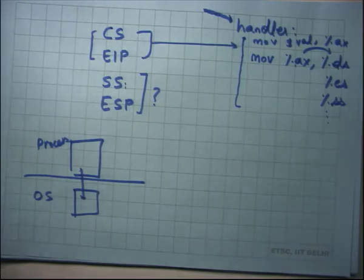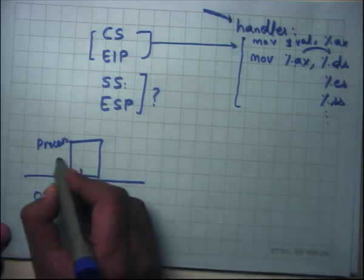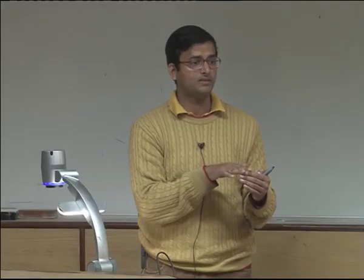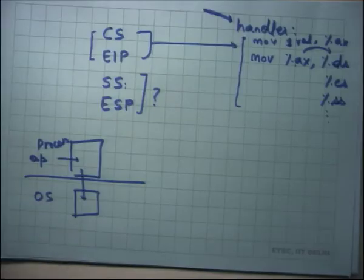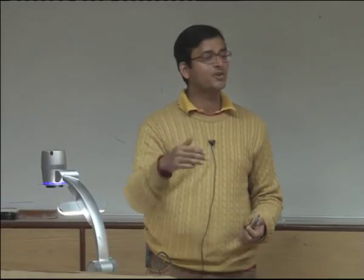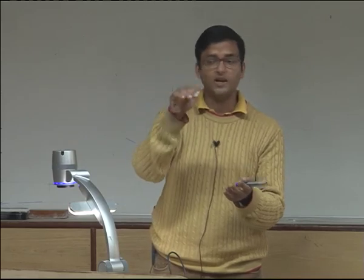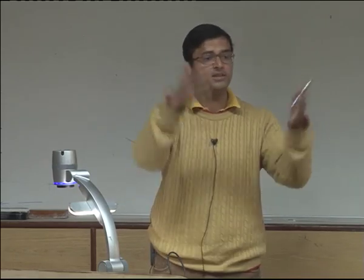Where does the hardware save old CS and EIP? One typical place is the stack. One option is to push CS and EIP to the user stack — decrement ESP and stuff CS and EIP on top of it. However, the process is untrusted. A process could set ESP to 0 and then call 'int $something', causing the hardware to try to write CS and EIP to address 0, an invalid address.